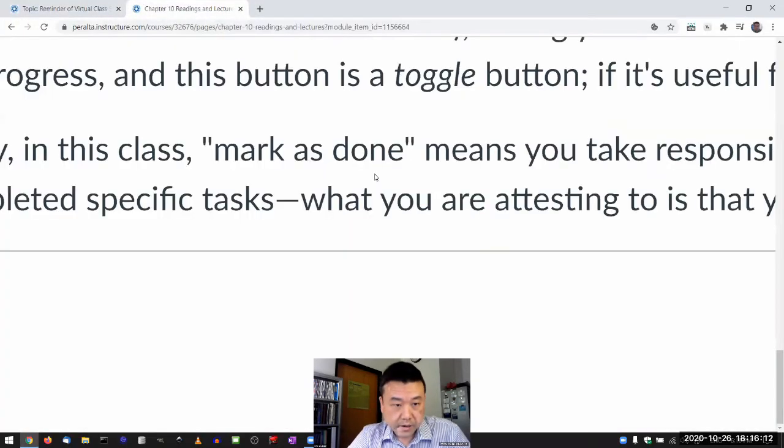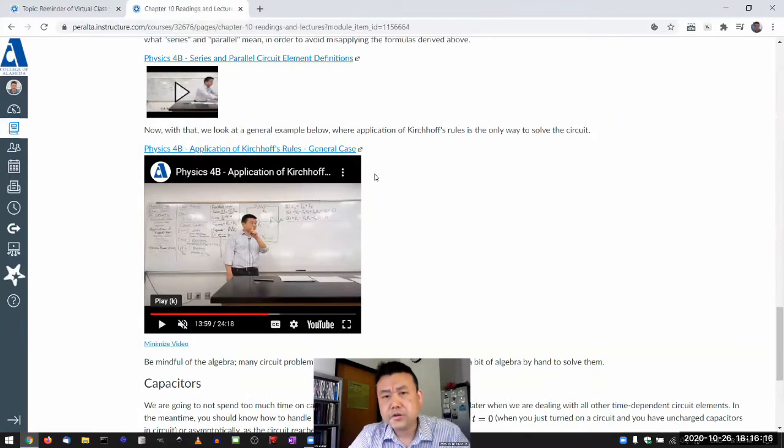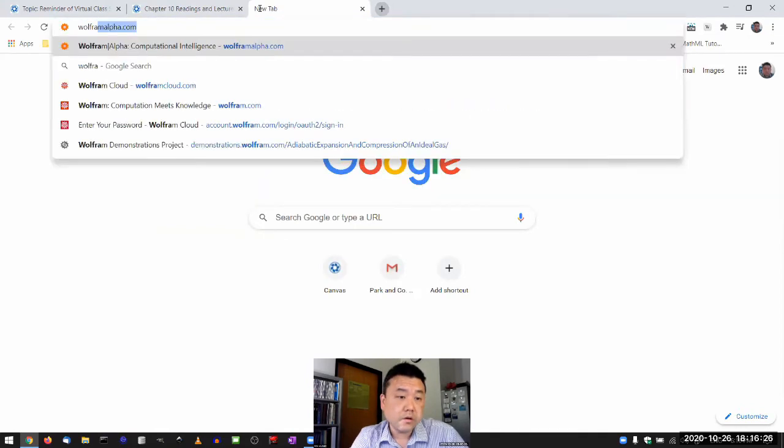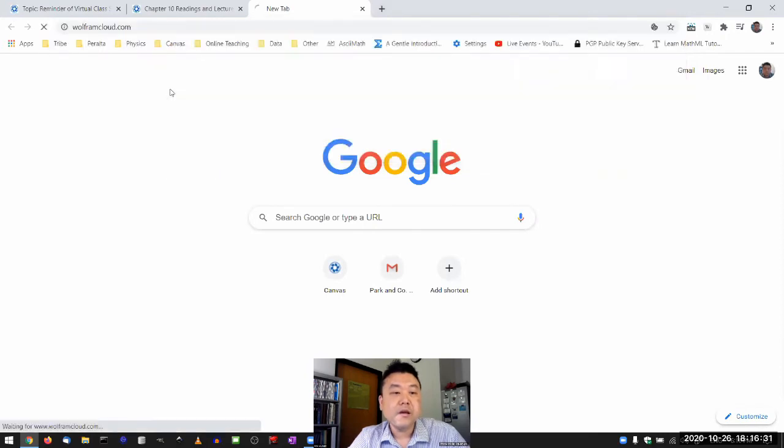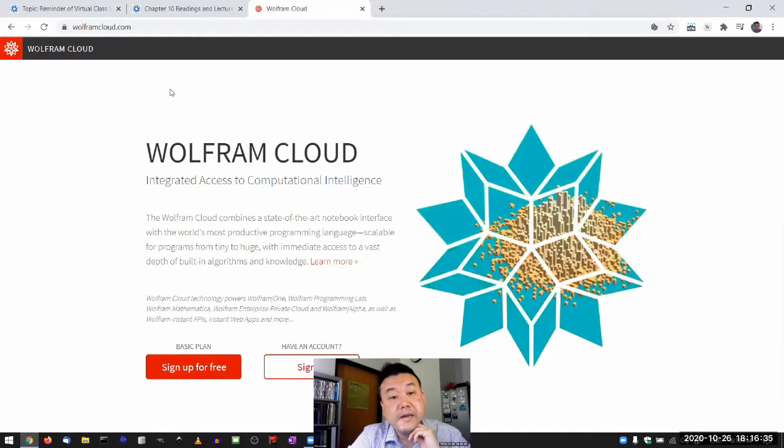So one computer algebra system that I'm not going to spend too much time on other than to just tell you it's there and I will leave it up to you to explore it or not is the Wolfram version of computer algebra system that's available for free. If you go to Wolfram cloud, which I was testing out before this session, they have a free version, basically a free version of Mathematica there.